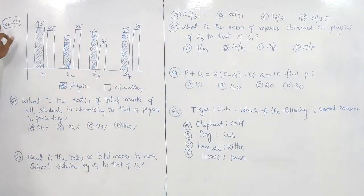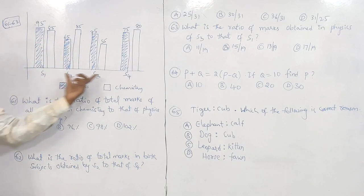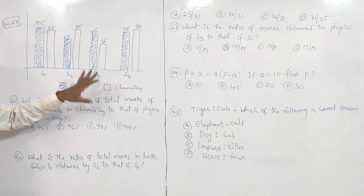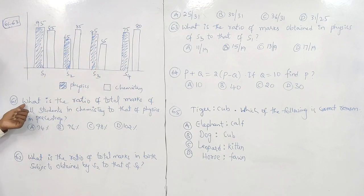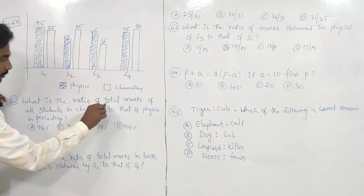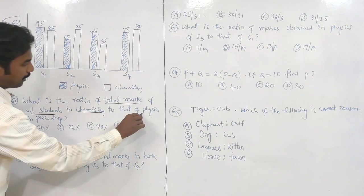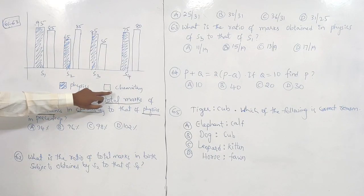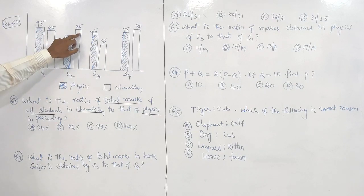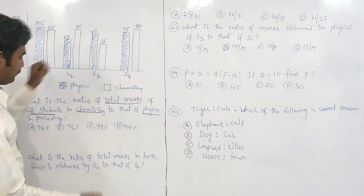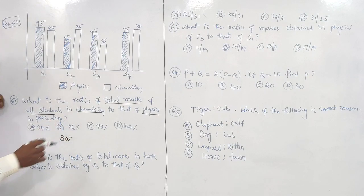Questions 61 to 63 are related to data interpretation. Four students' marks are given in physics and chemistry. Question 61: what is the ratio of total marks of all students in chemistry to that of physics, in percentage? We need to add chemistry marks: 85 + 85 = 170, + 55 = 225, + 80 = 305. That is total chemistry marks.